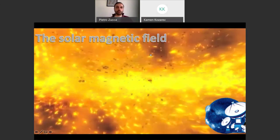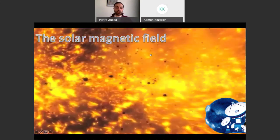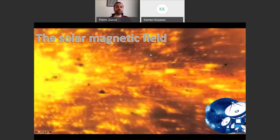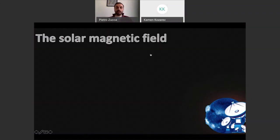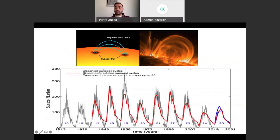These explosions are called flares or coronal mass ejections. When this happens, you have a lot of material that is ejected from the sun and it can arrive on earth.